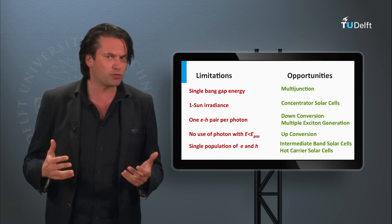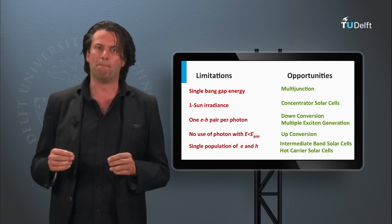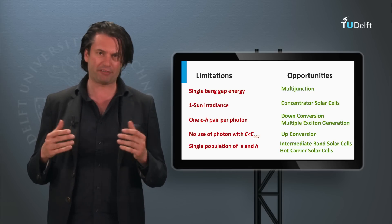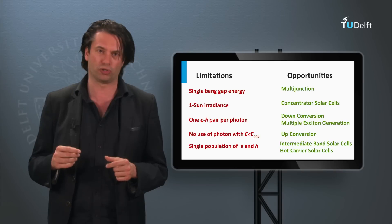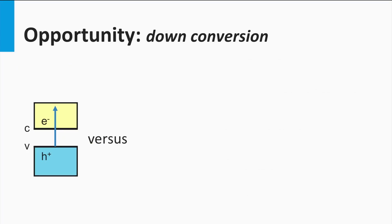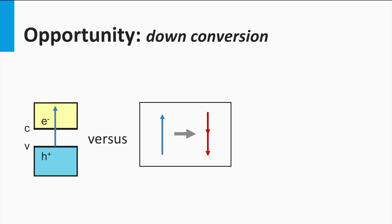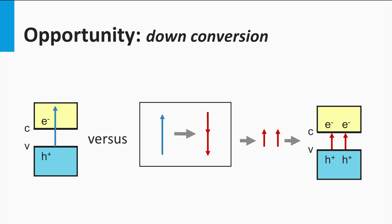Here I will give a quick introduction to down-conversion, multiple exciton generation, up-conversion, hot carrier solar cells, and intermediate band solar cells. Let's start with spectral conversion, which results in splitting one photon into multiple lower-energetic photons, and may tackle the problem that per photon only one electron is excited. A down converter is a material that absorbs a high-energetic photon and converts it into at least two lower-energetic photons. If the energy of both photons is still larger than the band gap of the photovoltaic material, both photons can be absorbed and used for exciting charge carriers.